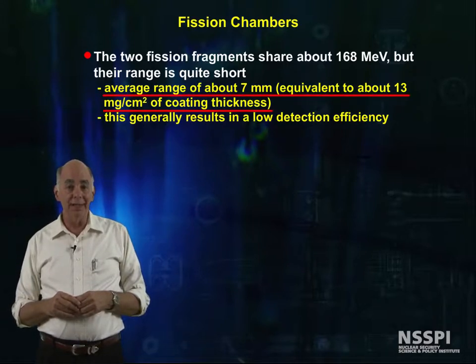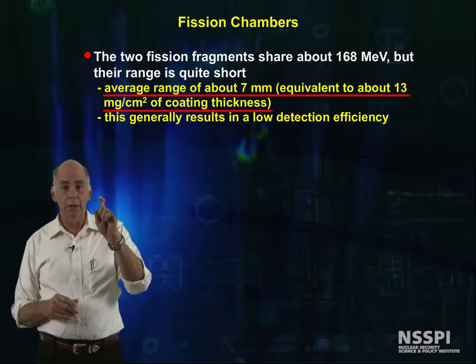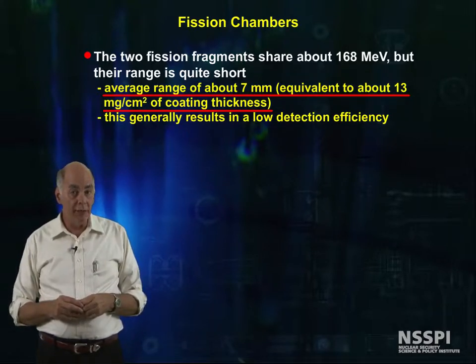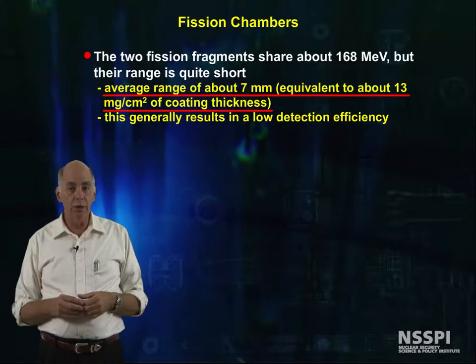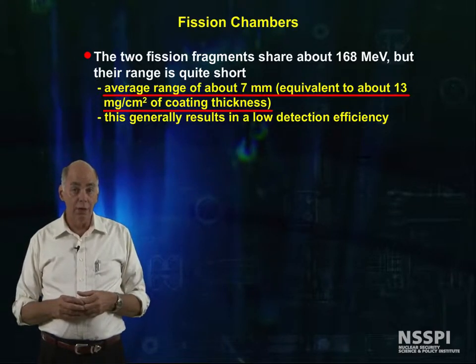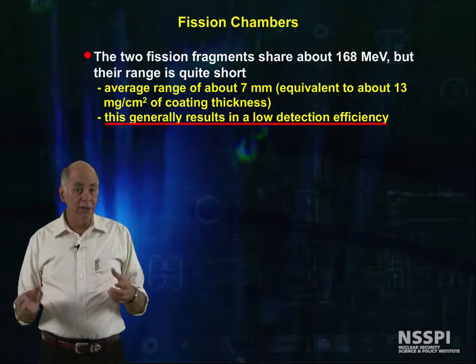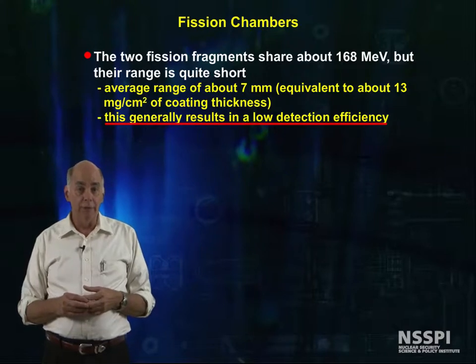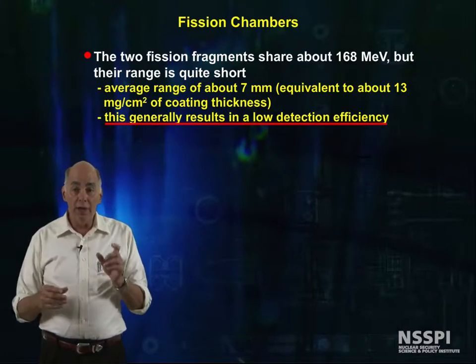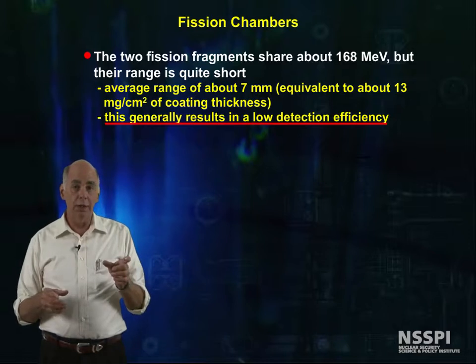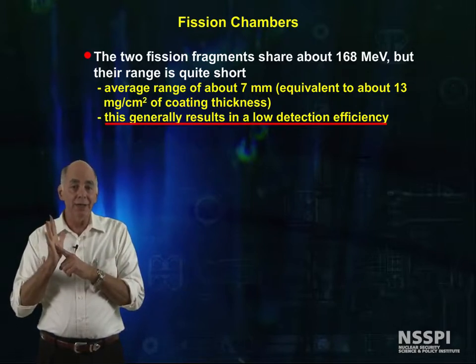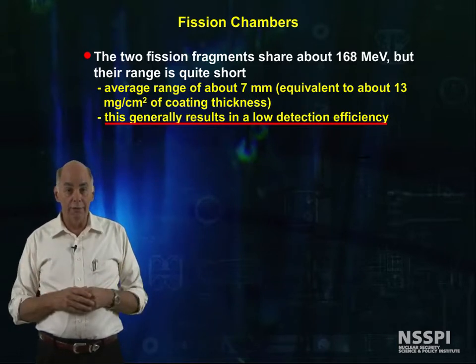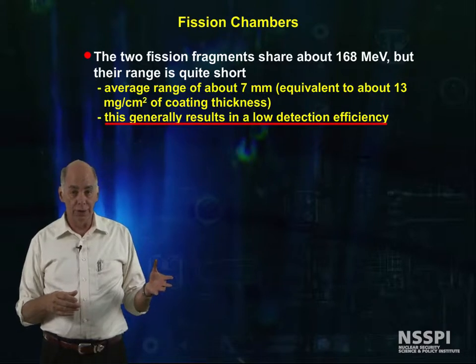The average range in air is a few centimeters. And in U-235 metal, the range is only 7 micrometers, which is equivalent to about 13 milligrams per square centimeter coating thickness. This generally results in a low overall detector efficiency for fission counters. Making the coating thicker doesn't help because the fission products created next to the wall can't escape through the U-235 to get into the gas to generate a signal.